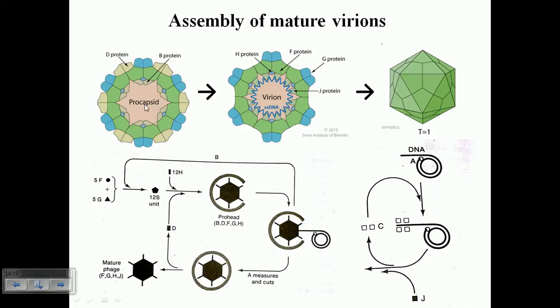This mature capsid will have G protein attached as a spike coming out. H proteins will be there to organize and J proteins will be added. It's very important to add J proteins to make the DNA structure compact. Then we produce a mature assembled phage.